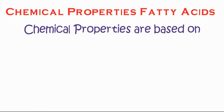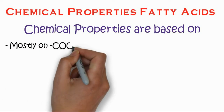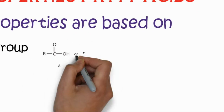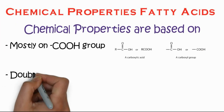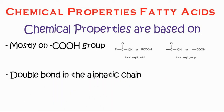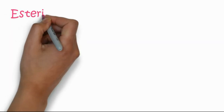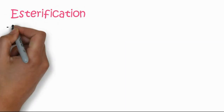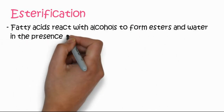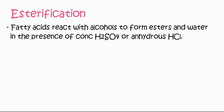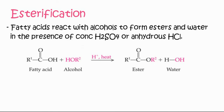Chemical properties of fatty acids are based mostly on the carboxylic acid group and also on the double bonds in the aliphatic chain. For example, hydrogenation and halogenation reactions are based on the double bond. The first reaction is esterification: fatty acids react with alcohol to form an ester and water in the presence of concentrated H2SO4 or anhydrous HCl.